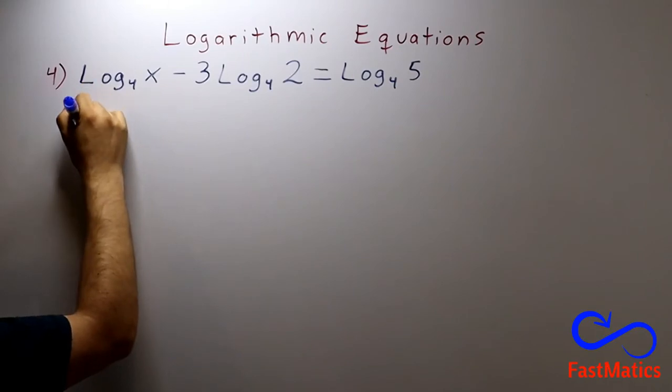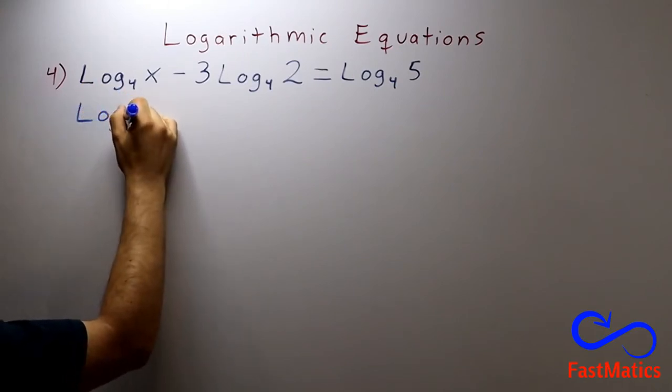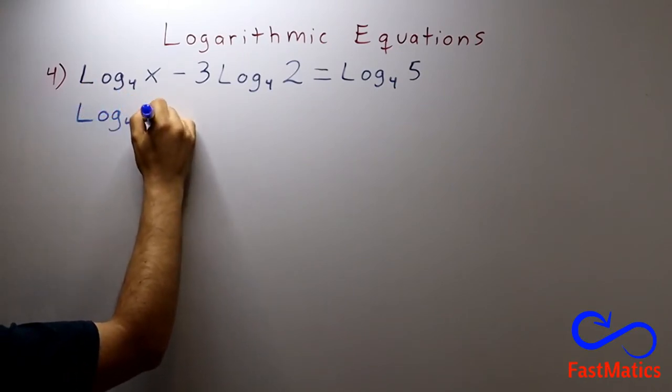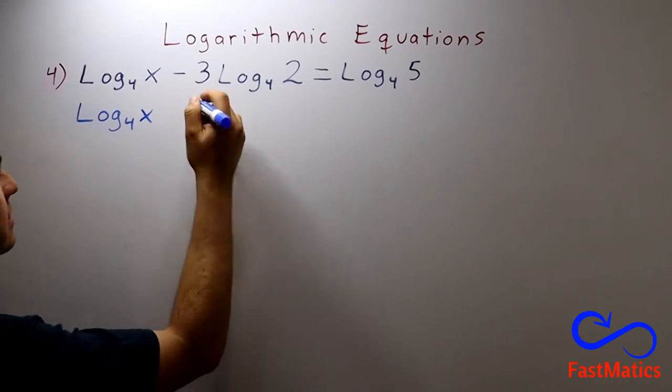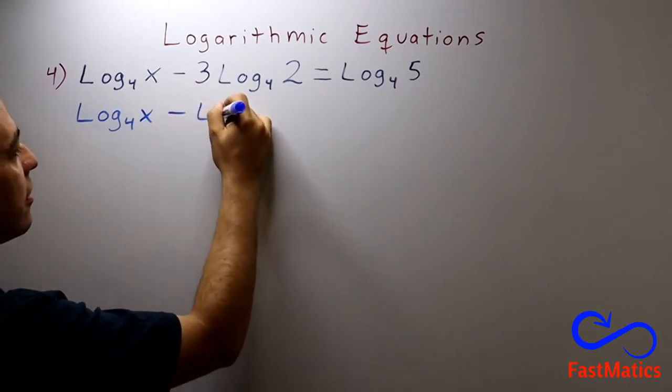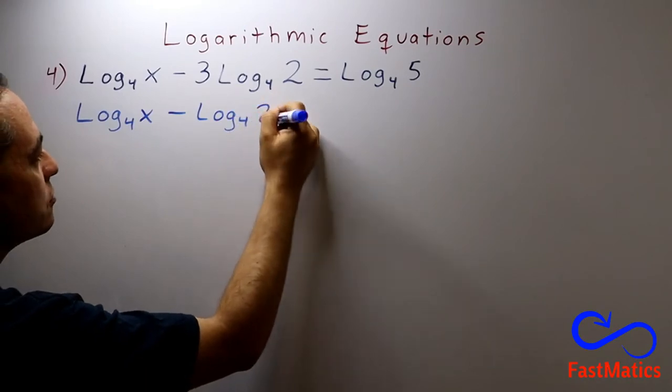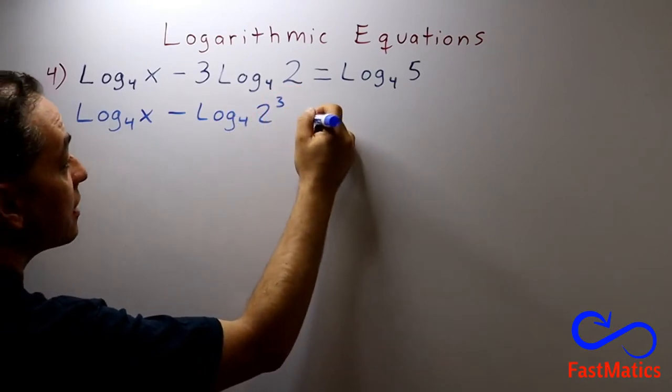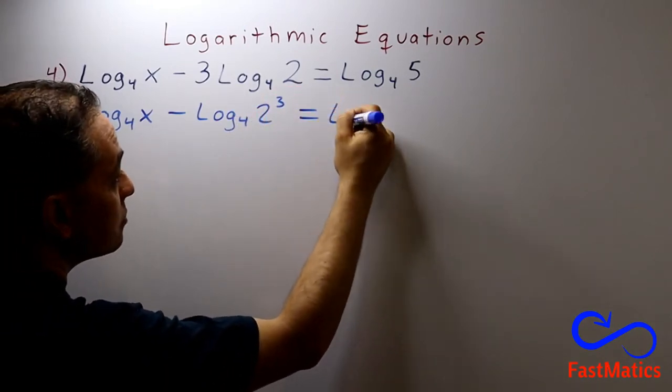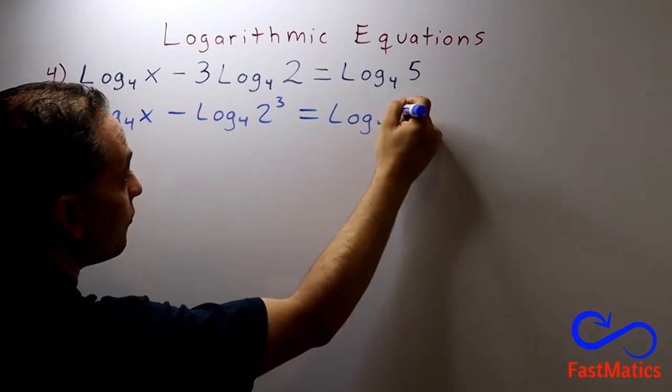So I am going to write logarithm base 4 of x minus logarithm base 4 of 2 to the power of 3 equal to logarithm base 4 of 5.